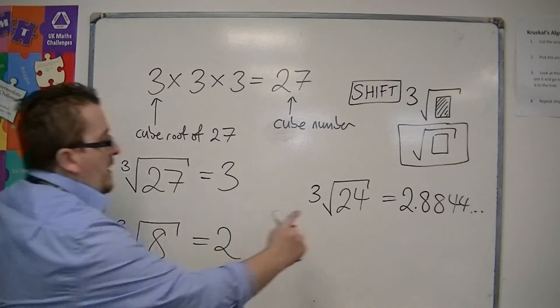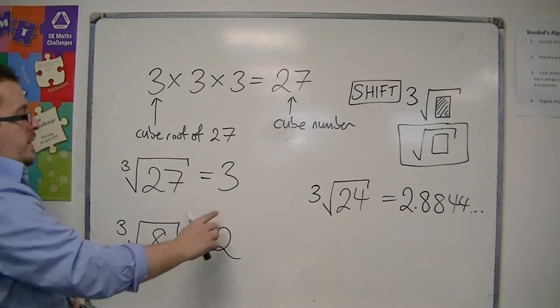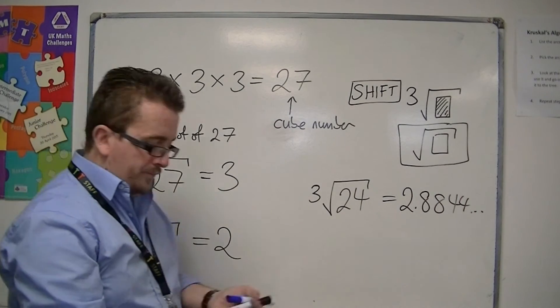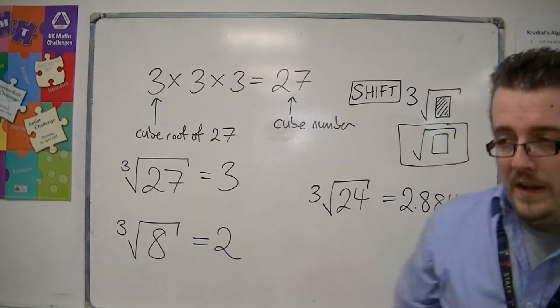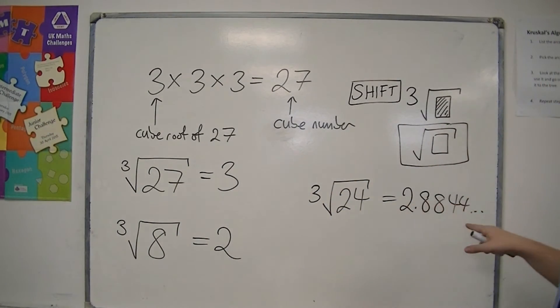So you can see that the answer is between 2 and 3, because the number 24 is between 8 and 27. So that is how you find a cube root using your calculator.